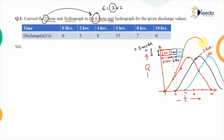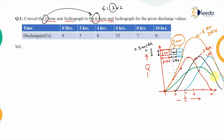The combination of the three lagged unit hydrographs gives a 6-hour direct runoff hydrograph, since the total rainfall depth is 1 + 1 + 1 = 3 cm. To convert it to a unit hydrograph we divide all ordinates by 3 cm.